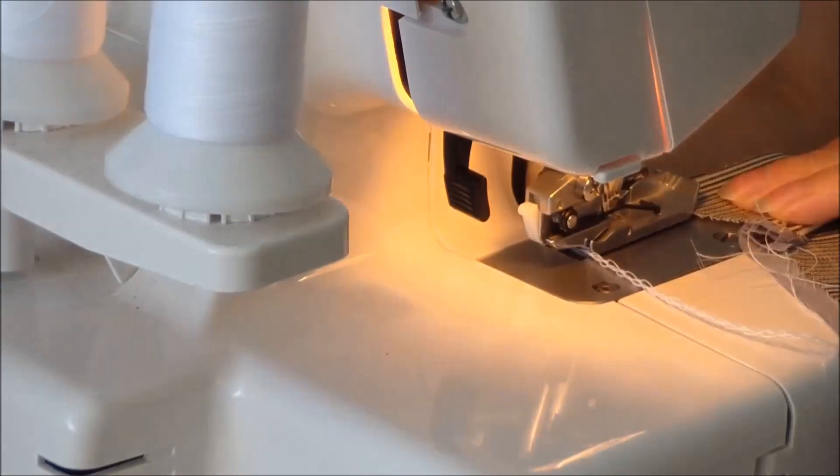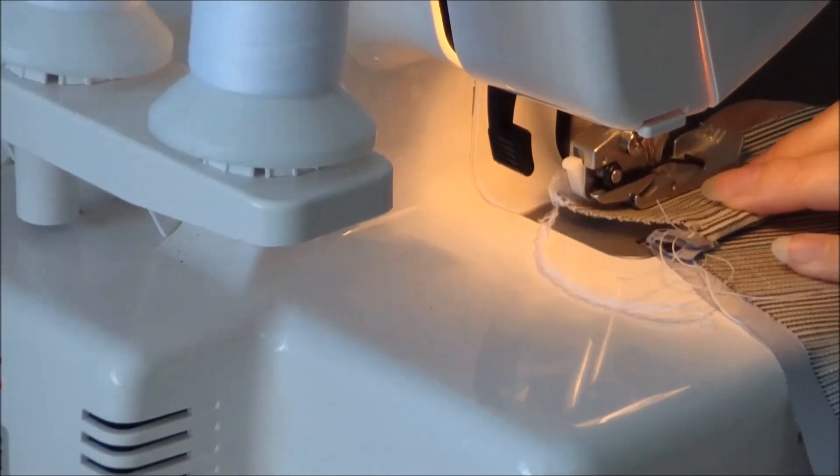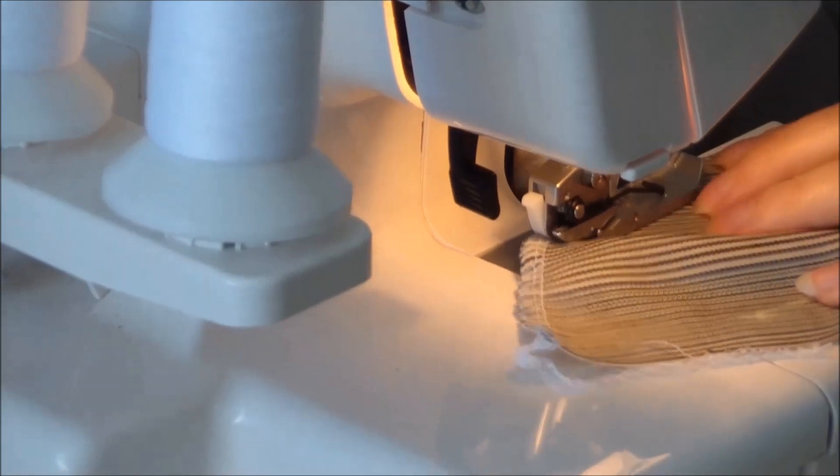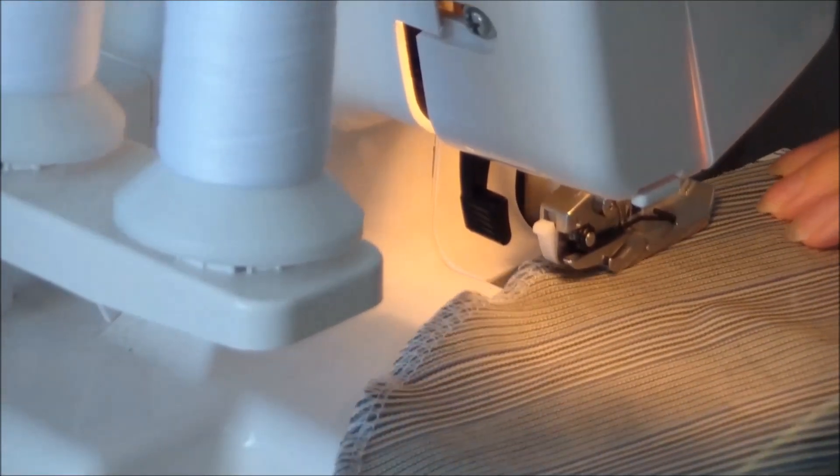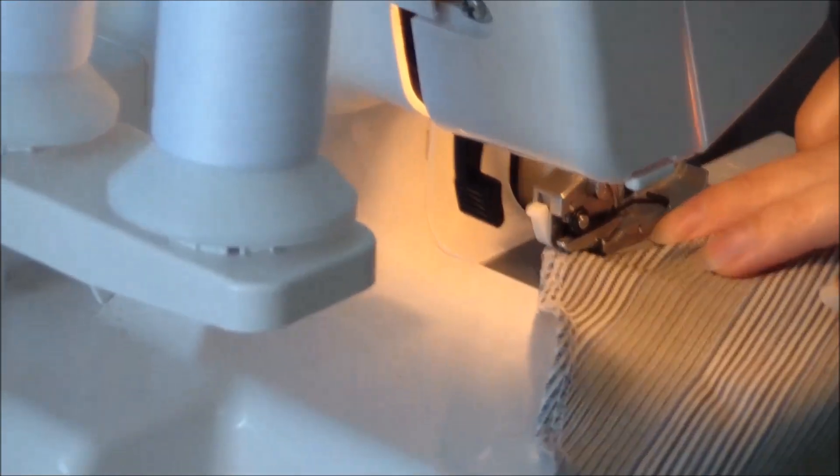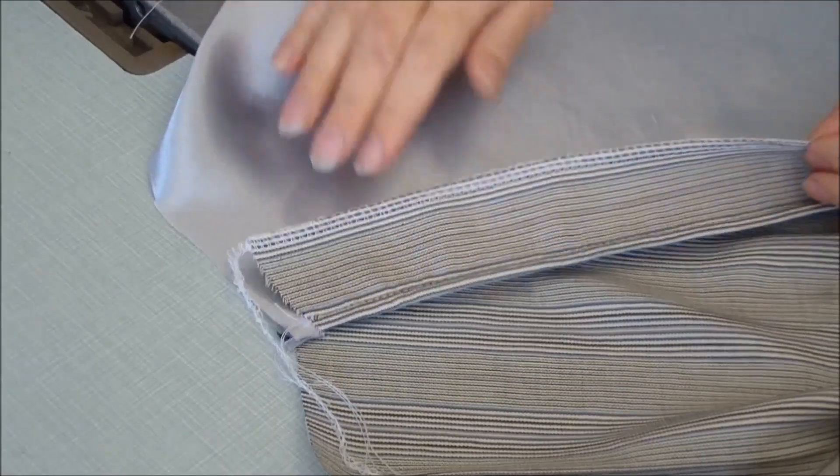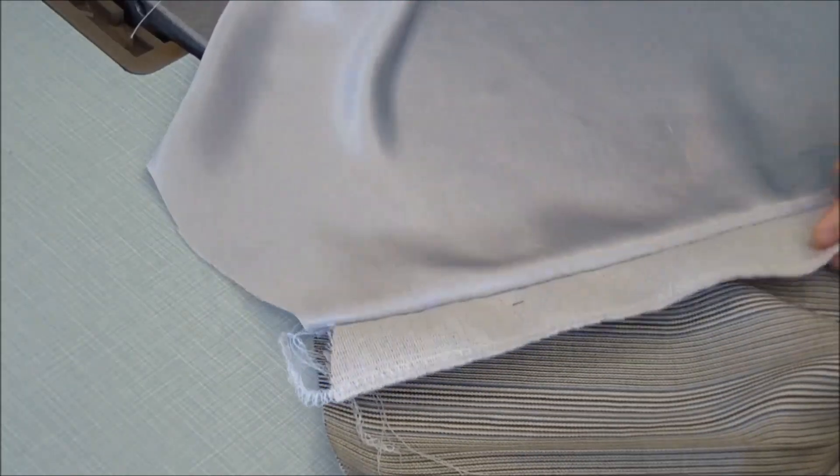This edge of strip must be overcast with an overlock. The rounded edge of the pocket pouch also needs to be overcast on the serger. The overcast edge of this part must now be secured with a straight seam.